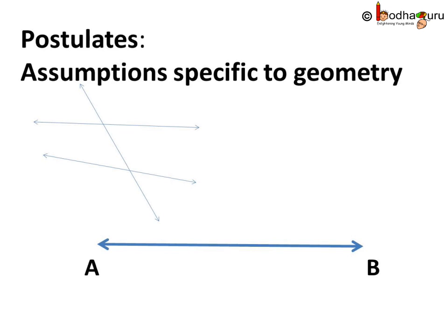You know, Euclid also wrote down many assumptions which are actually obvious universal truths. Few assumptions were only for geometry which he called postulates. For example, a straight line may be drawn from any point to any other point.